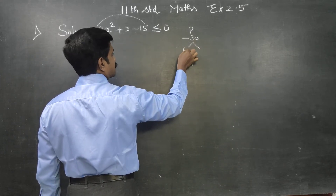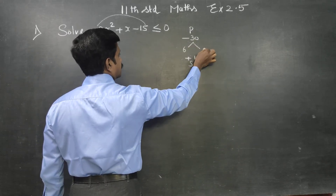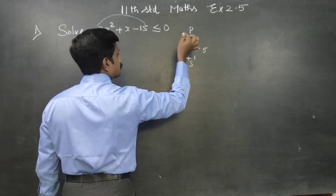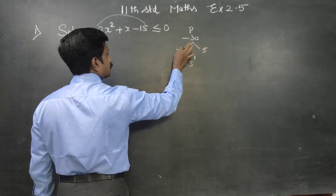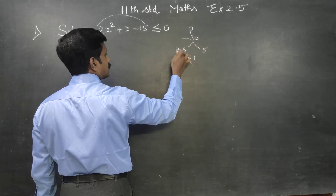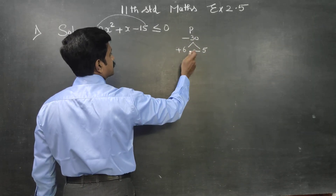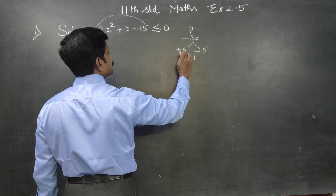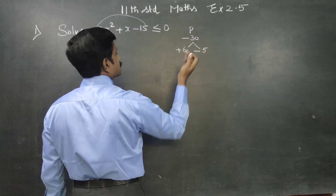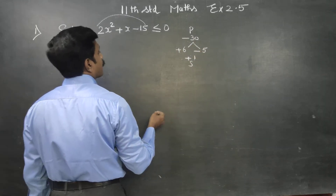The factors are 6 and 5 — 6 times 5 is 30, correct? Here one is plus and the other is minus. Check: plus into minus is minus 6 times 5 is 30, and 6 minus 5 is 1. Super.